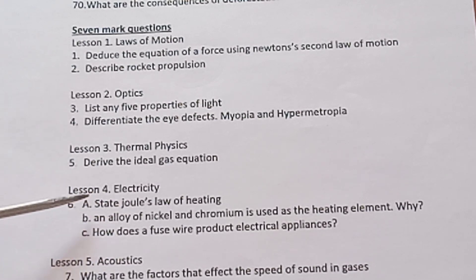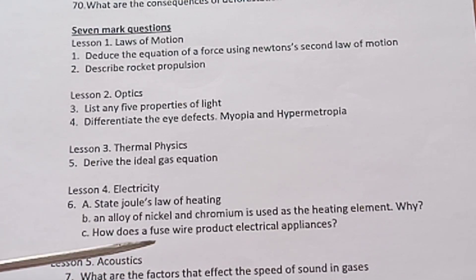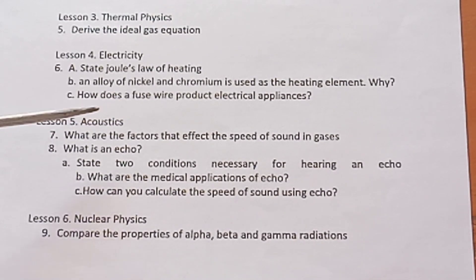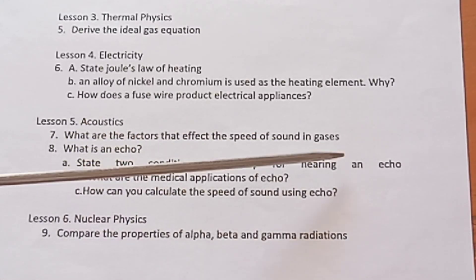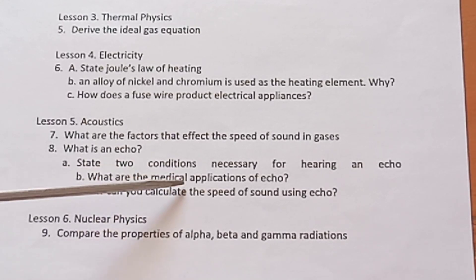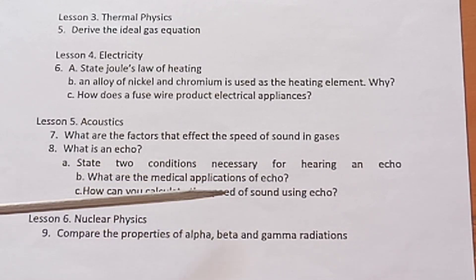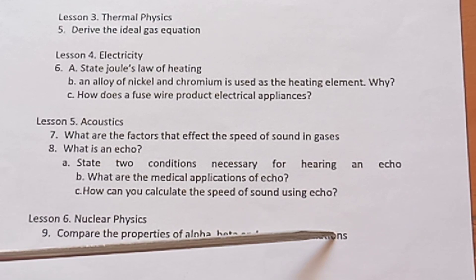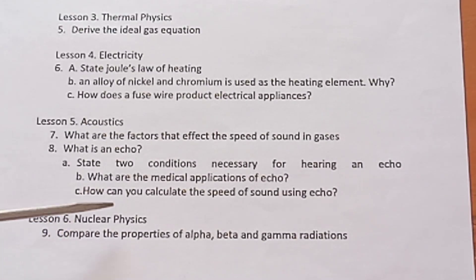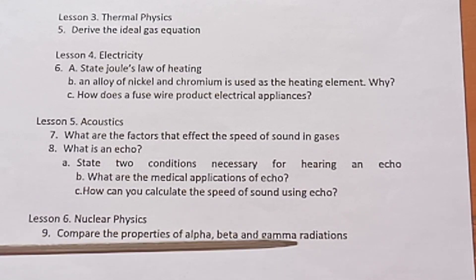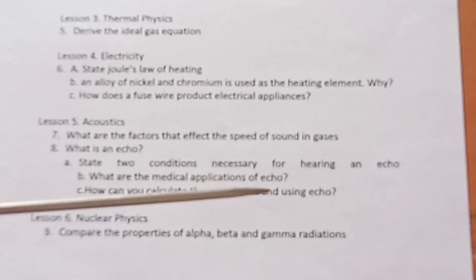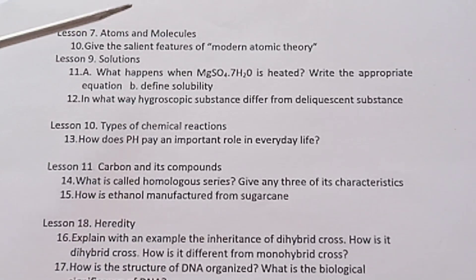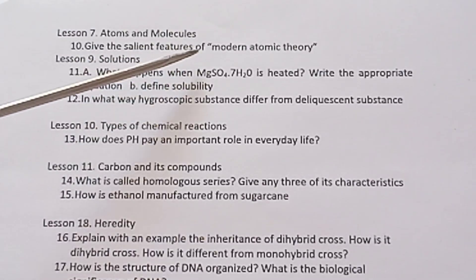Three questions are seven marks. Each one carries two plus three marks. Lesson 5 Acoustics. What are the factors that affect the speed of sound in gases? What is an echo? State two conditions necessary for hearing an echo. What are the medicinal applications of echo? How can you calculate the speed of sound using echo? Lesson 6 Nuclear Physics. Compare the properties of alpha, beta, and gamma rays. You have to draw the tabulations. Lesson 7 Atoms and Molecules. Give the salient features of modern atomic theory.